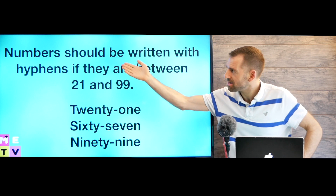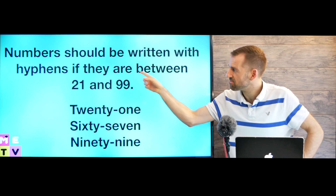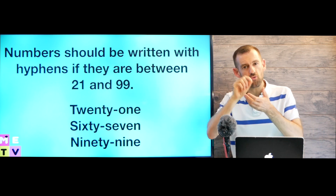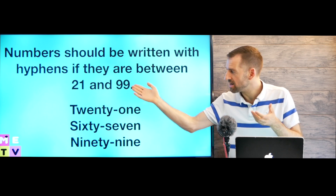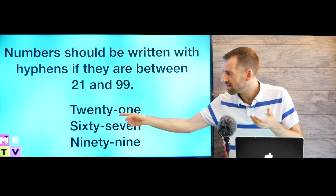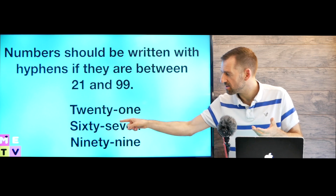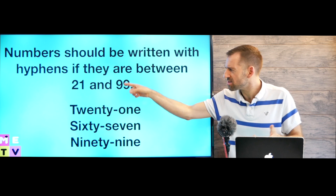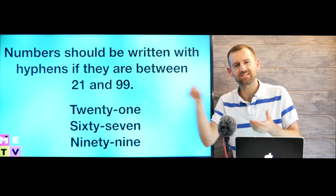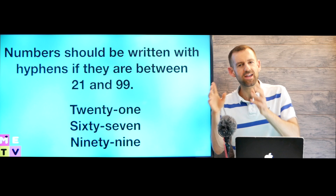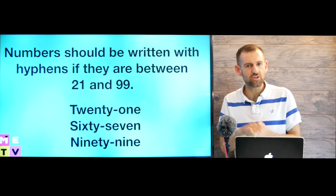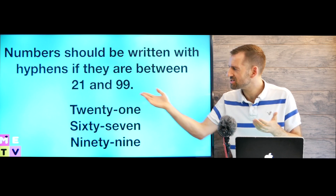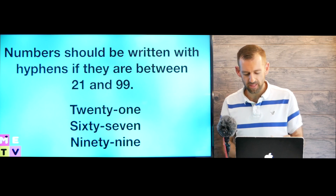Numbers should be written with hyphens if they are between 21 and 99. If you write out numbers, you should use a hyphen: twenty-one, sixty-seven, ninety-nine. Usually we can just write the numerals like 21 or 99. If a number is below ten, you should write it out as a word, but if it's more than ten, it's usually okay to just write the numeral.